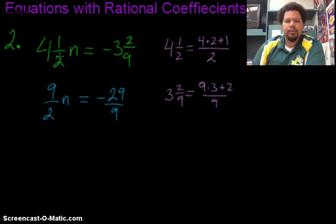So all I did was multiply the 2 times 4, add the 1, keeping the denominator of 2. That gave me the 9. Multiply the 9 times the 3 plus 2, kept the denominator 9.